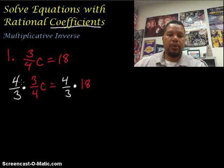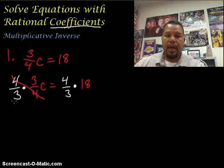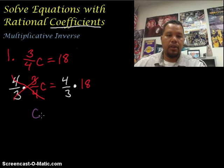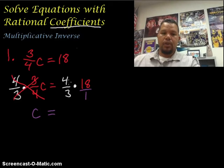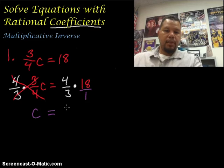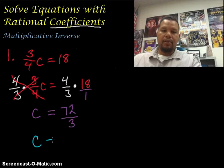So the multiplicative inverse allows us to cancel out this factor. The 4s cancel out or divide out and the 3s divide out, leaving us with c isolated. And then over here, we're going to go ahead and multiply this out. I like cross-canceling first, or you can multiply straight across. So straight across, 4 times 18 is 72, and 3 times 1 is 3. Then I'm going to simplify this out, dividing 3 into 72. So it goes in 24 times. So my c equals 24.